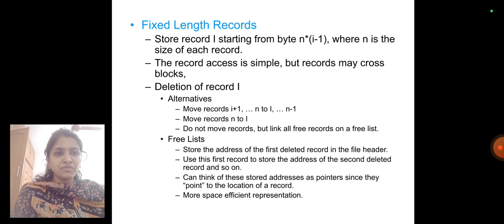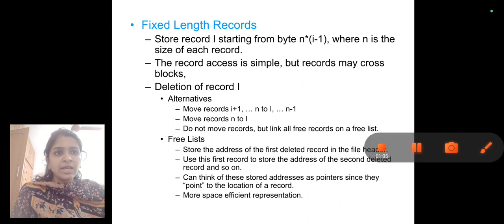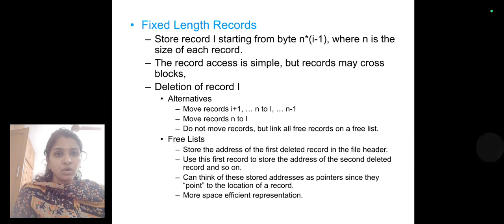Free list: store the address of the first deleted record in the file header. Use this first record to store the address of the second deleted record, and so on. Can think of these stored addresses as pointers since they point to the location of a record. More space efficient representation.